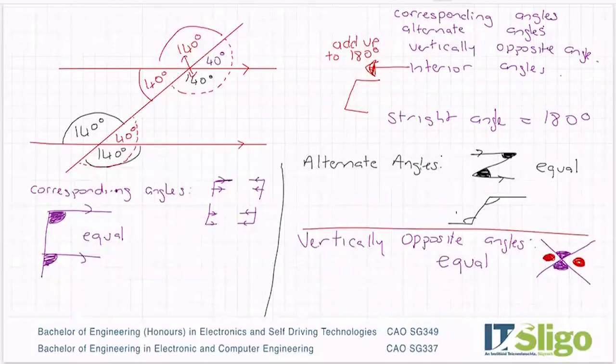So interior angles add up to 180 degrees. And it's probably the least one used because we have corresponding and alternate and everything else. And there's so many ways to spot those angles that we tend not to end up using interior much. But it is also very handy.